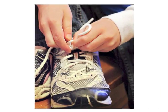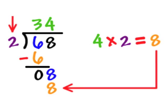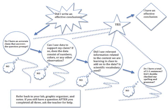For example, tying shoes requires a chain of actions, learning the process for long division, as well as larger, more complex tasks, such as writing an effective conclusion.